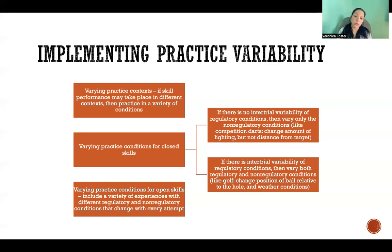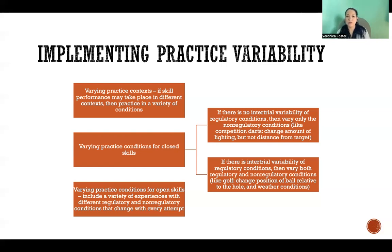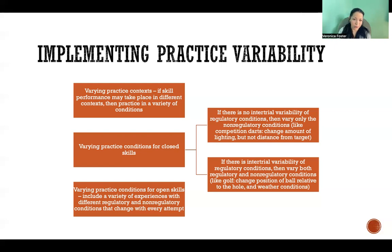For a closed skill where there is intertrial variability of regulatory conditions, a good example is golf. Golf is a closed skill, but every single stroke is going to be a little different because of where the ball is located. You might need a different club, work around trees or sand pits, or be a different distance from the hole. There's a large amount of variability from one attempt to the next depending on where the ball lands. In that case, you'd want variability in both regulatory and non-regulatory conditions.